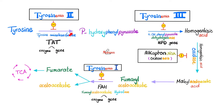Now let's name the enzymes. This enzyme right here is called tyrosine aminotransferase. This enzyme right here is called 4-hydroxyphenylpyruvate dehydrogenase. What does a dehydrogenase do? It removes hydrogen, and by removing hydrogen you're usually removing electrons. When you remove the negative electrons, it means you are oxidizing something. Oxidation and reduction are two phases to the same chemical coin — a redox reaction. And the last enzyme is fumarylacetoacetate hydrolase.